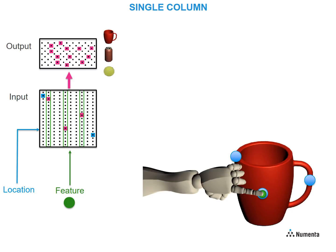The output layer invokes a union of the cells representing all objects which contain this feature at this location — in this case, a cup, ball, and can. What's happening here is the system is thinking: based on this sensory feature at this location, what could the object be? With this single touch, the system can eliminate many possibilities, but cannot disambiguate between these three objects.